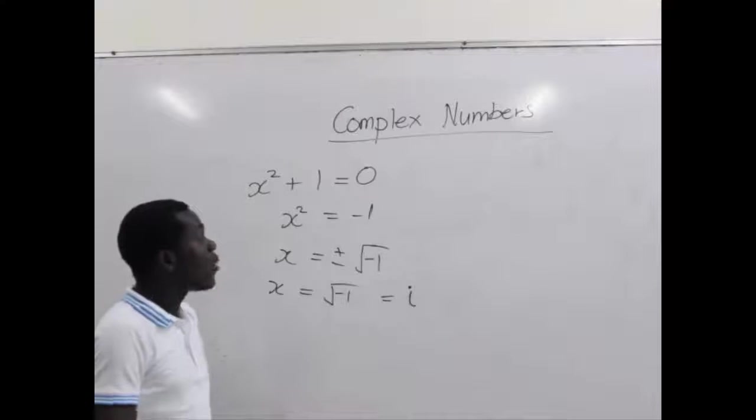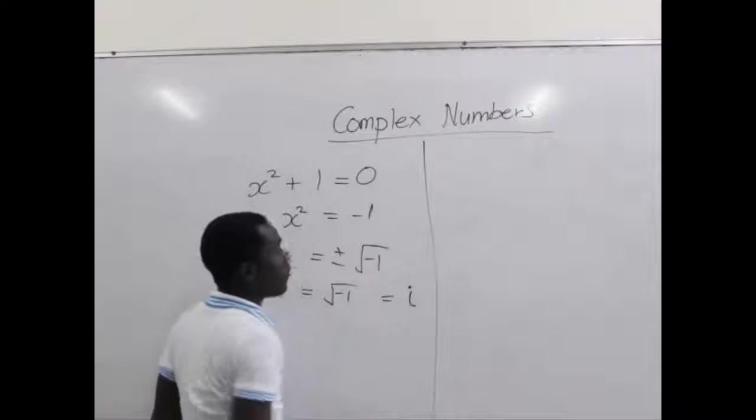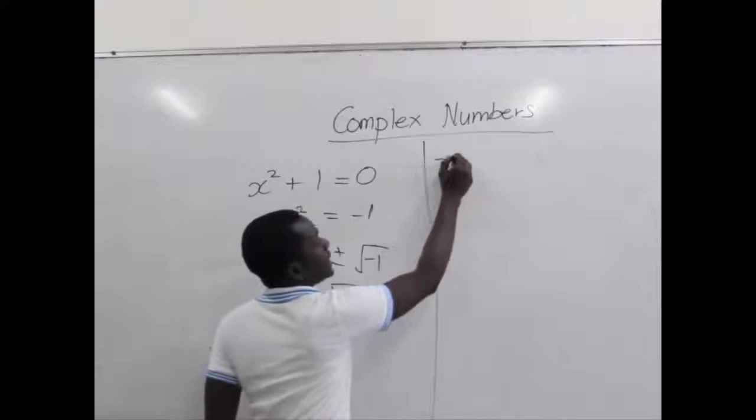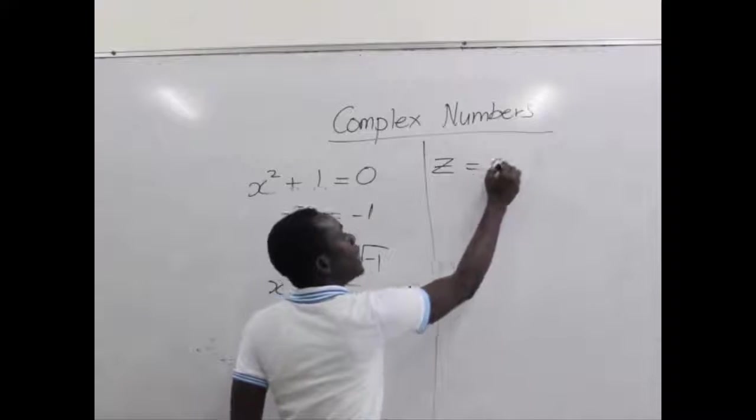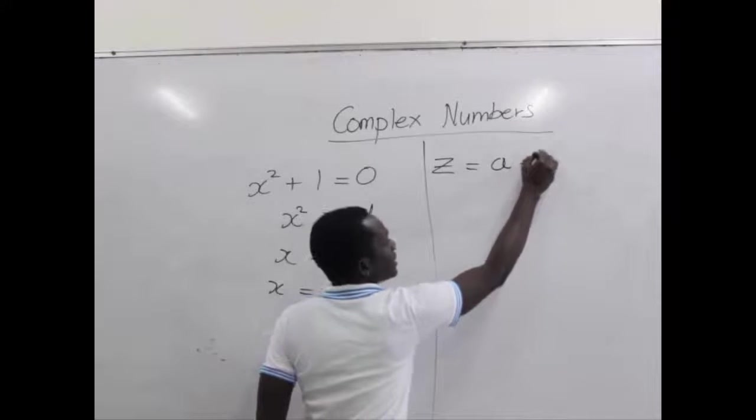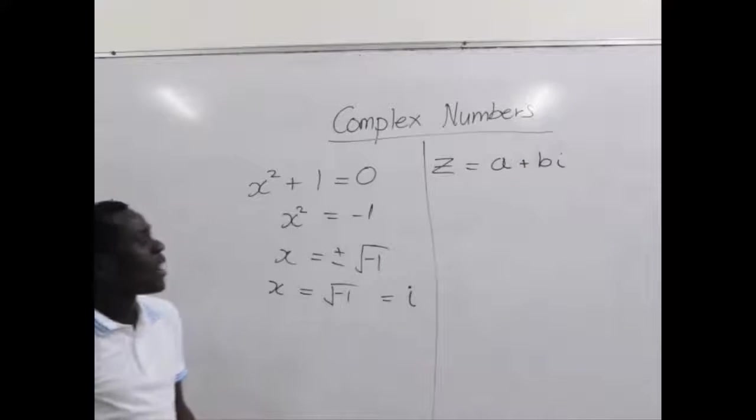Now, any complex number we can talk of occurs in the form, say z is a complex number, it is written in the form a + bi. Now why a + bi? There is a meaning to that.